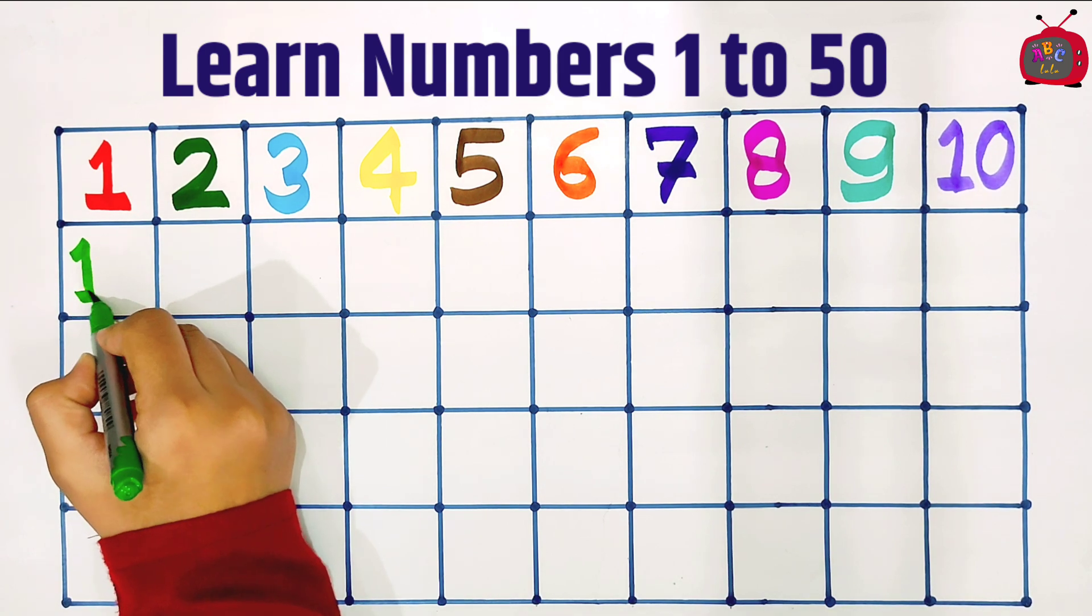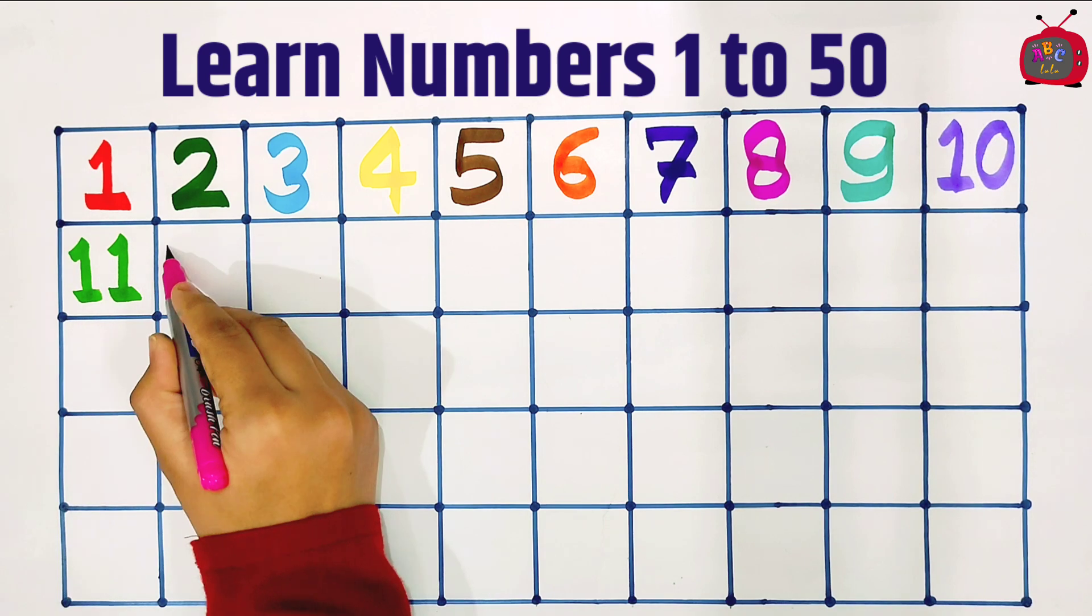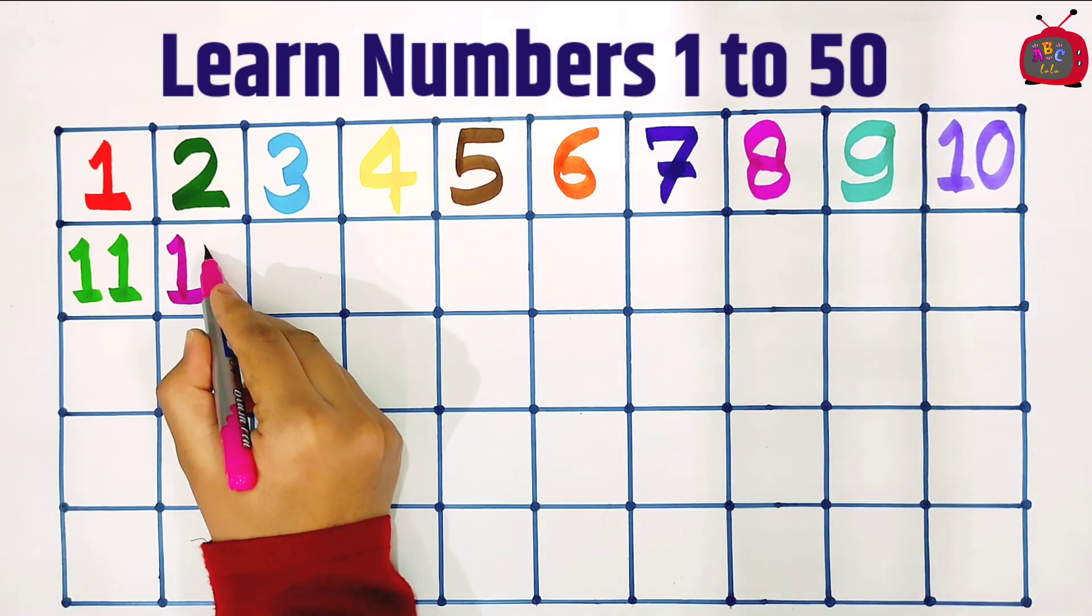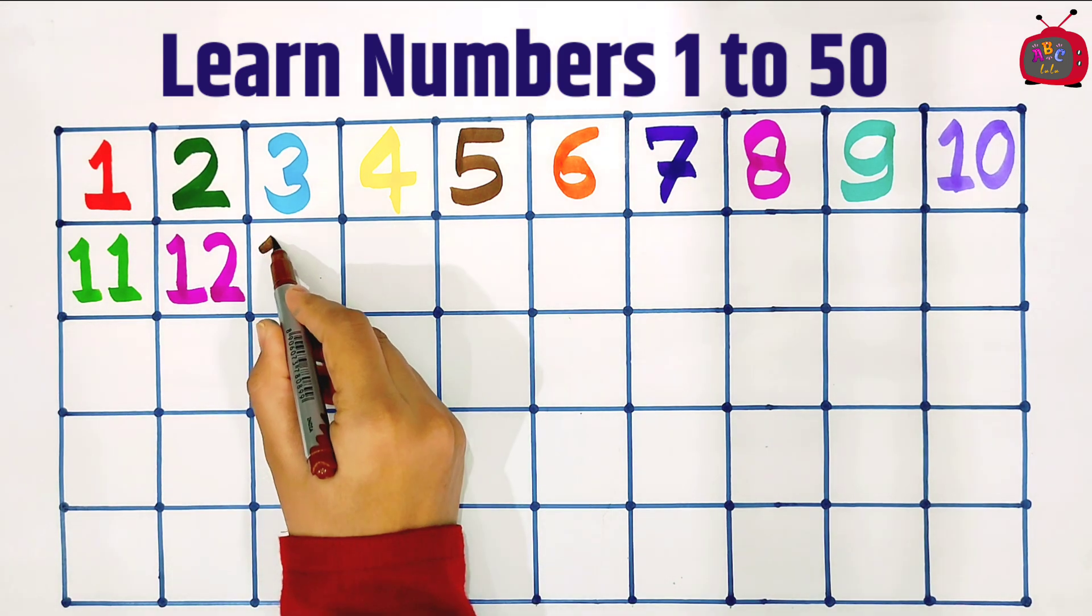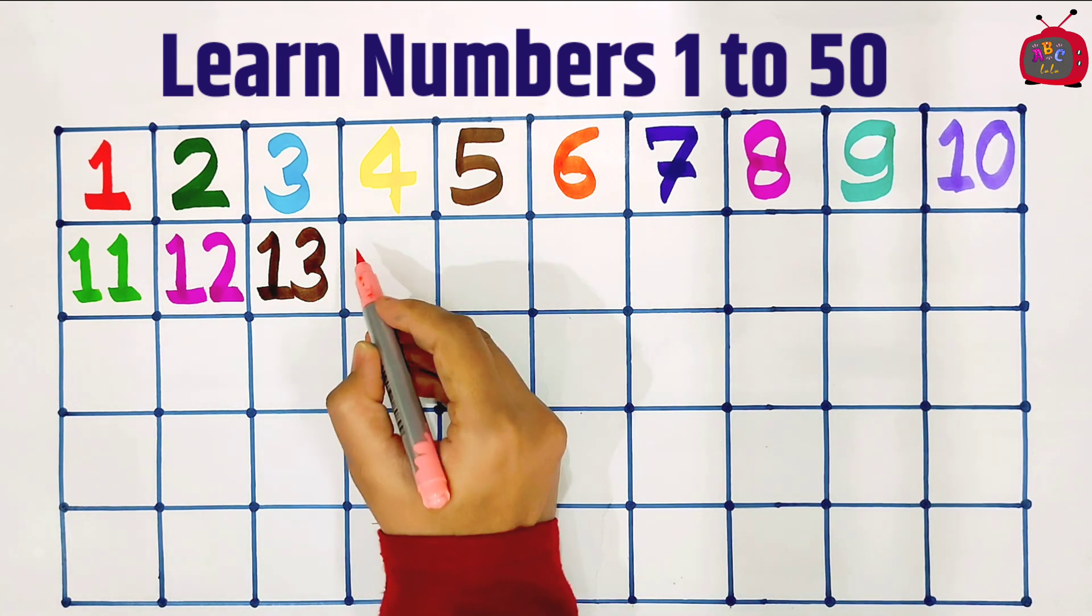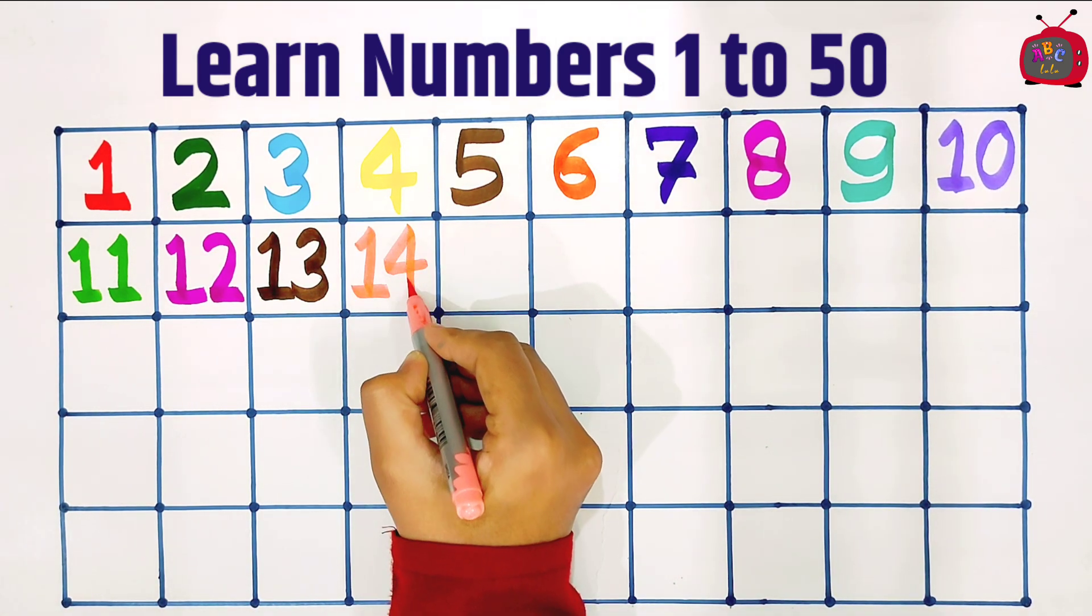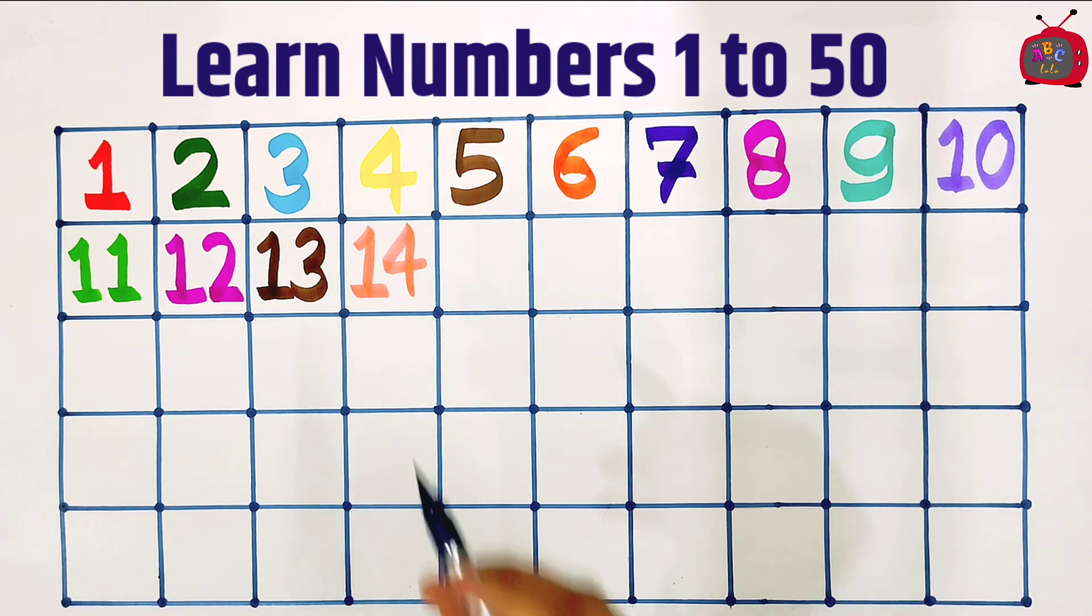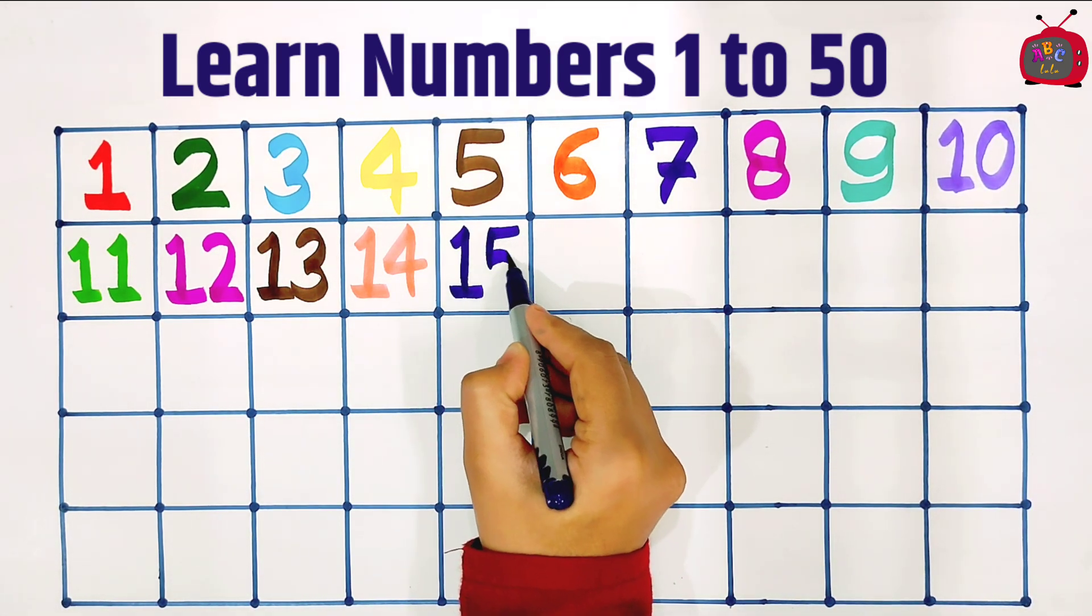One, one: eleven. One, two: twelve. One, three: thirteen. One, four: fourteen. One, five: fifteen.